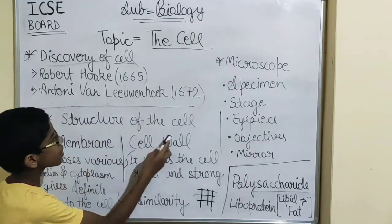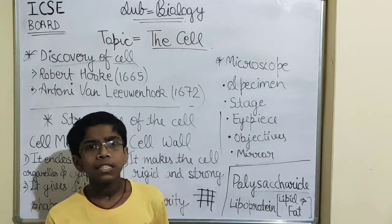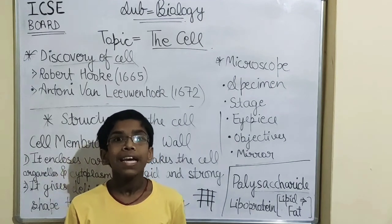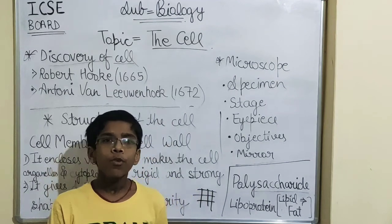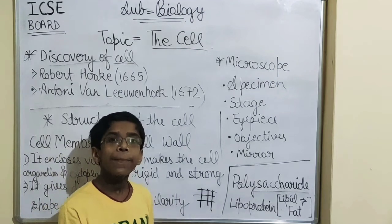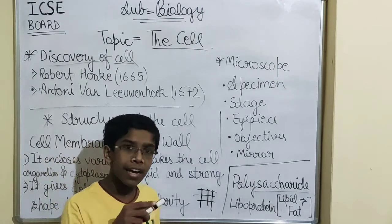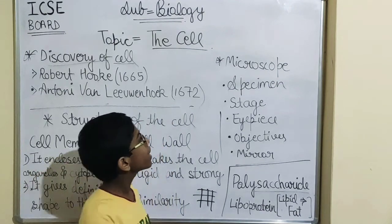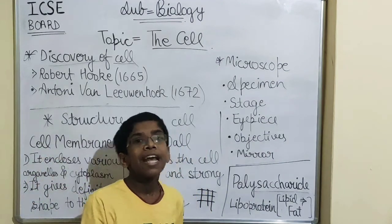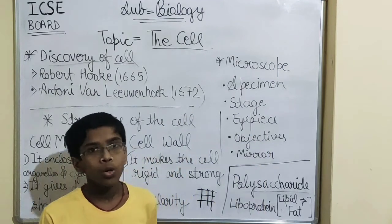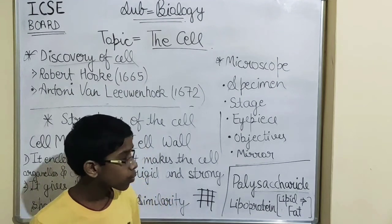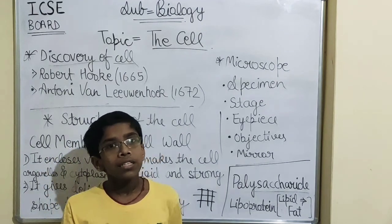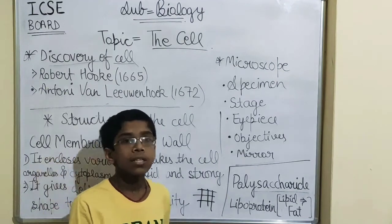Before studying the structure of the cell, let's discuss two or three activities from your book. The first activity: take a peel of an onion scale, cut it into a small piece, and keep it on the stage. Our specimen is the onion peel piece, kept on the stage. We have to stain it with dilute safranin, which is a type of dye that makes the cell contents more visible and clear.